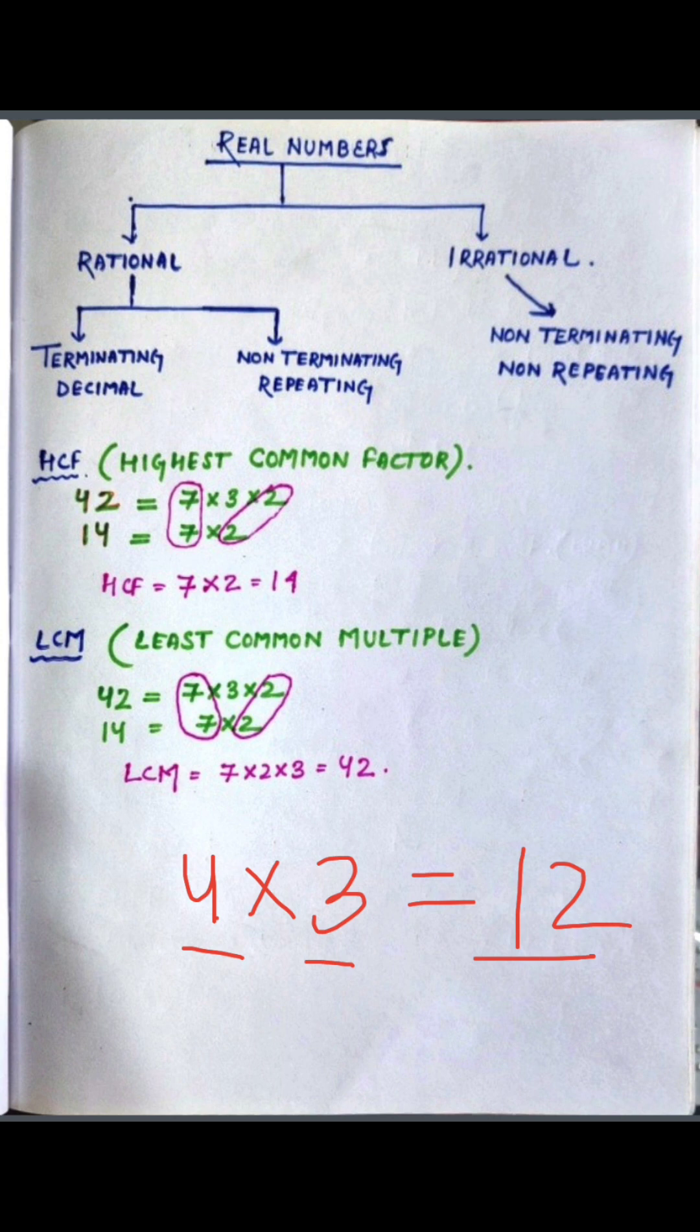This is the highest common factor. What does this mean? Take 42 and 14. These are factors. So 42 is 7 into 3 into 2, and 14 is 7 into 2. Then we see the common factors are 7 and 2. And 14 is the highest common factor. So what is the highest common factor? Which is the most common factor.